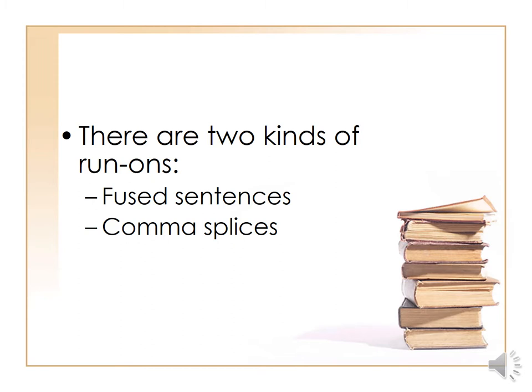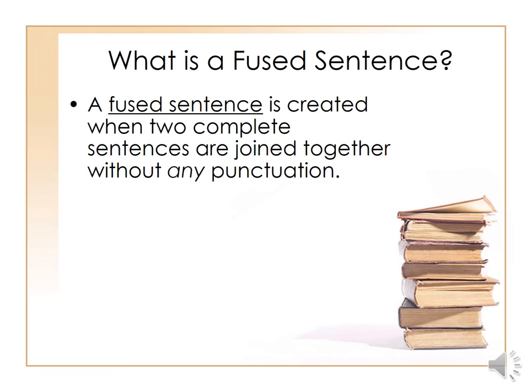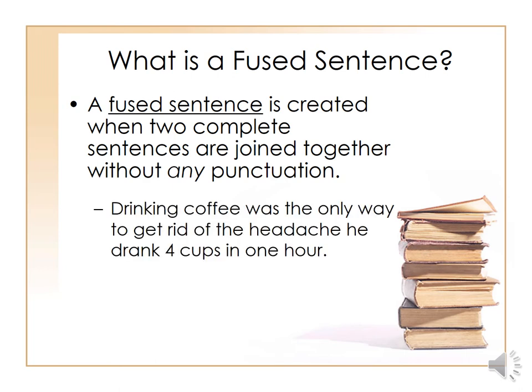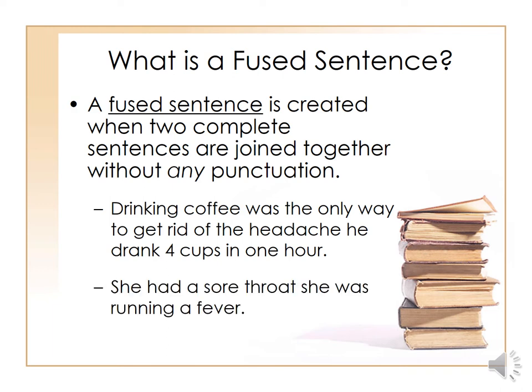There are two kinds of run-ons: fused sentences and comma splices. A fused sentence is created when two complete sentences are joined together without any punctuation. For example: 'Drinking coffee was the only way to get rid of the headache he drank four cups in one hour.' That's a whole run-on — two sentences fused together. Another example: 'She had a sore throat she was running a fever.' Again, two sentences together without the right punctuation.